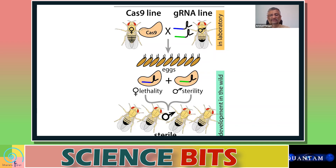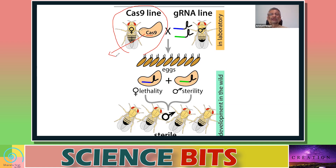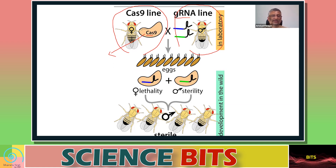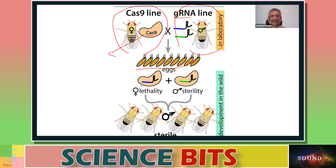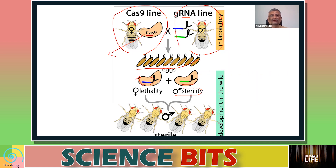In PGSIT, you have a female mosquito carrying the Cas9 gene — the CRISPR gene, which acts like a molecular scissor, cutting genes at a very specific place. When this female is mated with a male mosquito carrying a guide RNA, the Cas9 and guide RNA combine to produce eggs. Female offspring from these eggs are flightless, and male offspring are sterile.